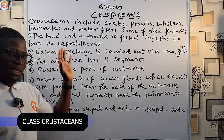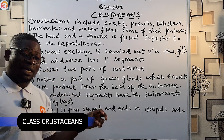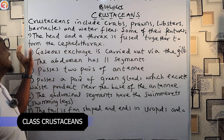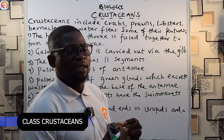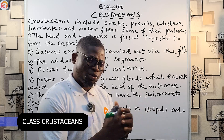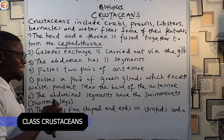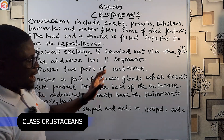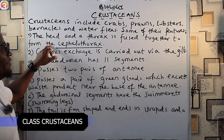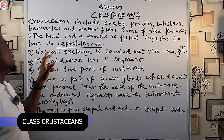Now some of their features: in the last episode we talked about the arthropods and said they are divided into three parts — the head, the thorax, and the abdomen. Now for crustaceans, the head and the thorax are fused together, and they are called the cephalothorax.